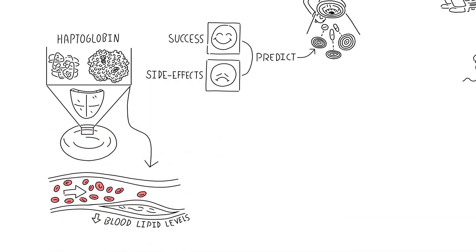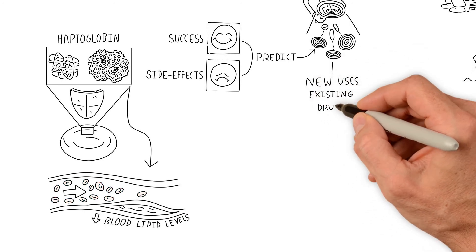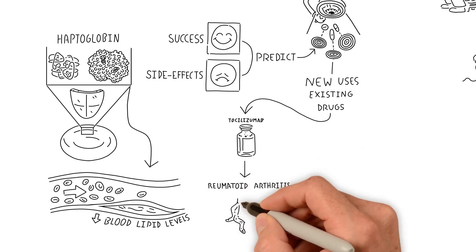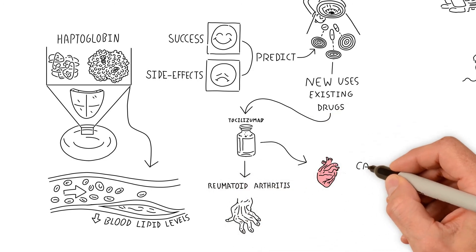We have also applied these methods to find new uses for existing drugs. Our results suggest that toculizumab, a rheumatoid arthritis drug, could be used for cardiovascular disease prevention.